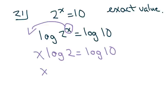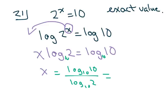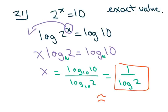What base is this? If there's no base here, it's base 10. Don't forget that it's base 10. So basically we get X equals log base 10 of 10 over log base 10 of 2. We know log base 10 of 10 is 1. So it's 1 over log of 2 — you don't have to put 10 if it's base 10. This is your exact value, and the approximate value, whether you did natural log or the other, is 3.322.